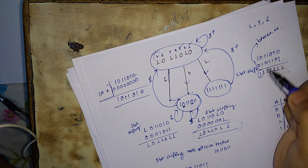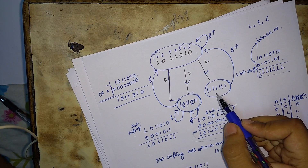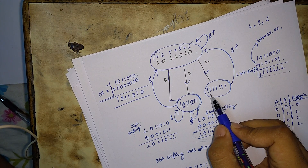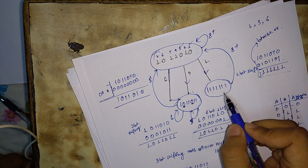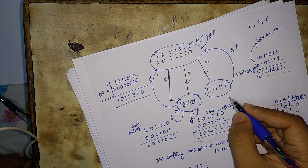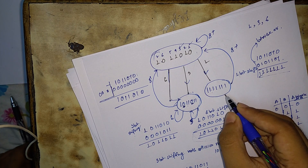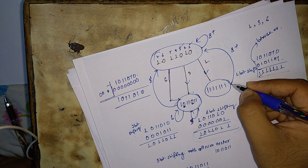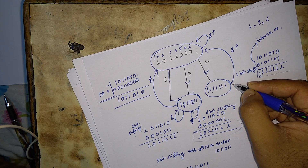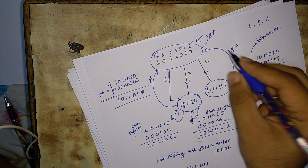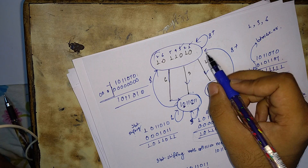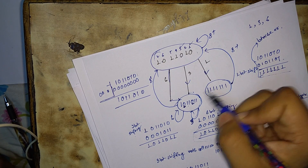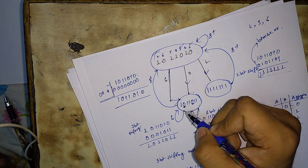If we perform an eight-bit shift over the second collision vector we also get the same bit string, and we write that it goes back to the initial state as well. The same applies for all remaining states.